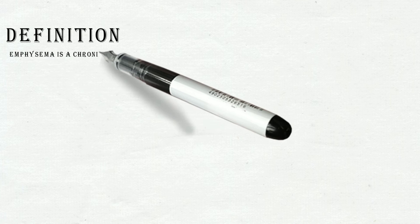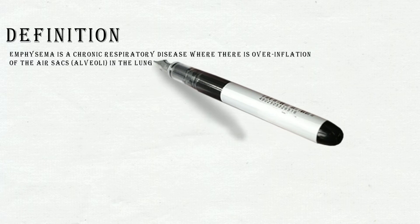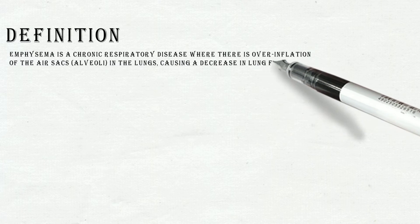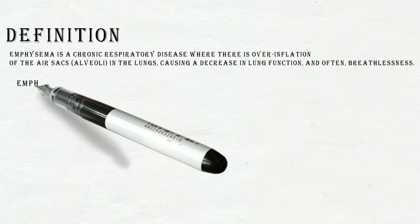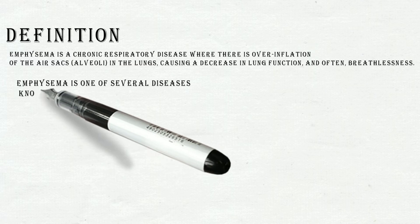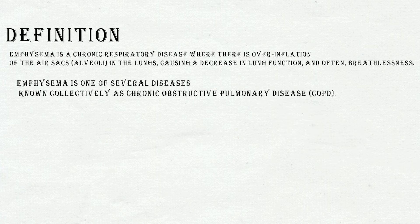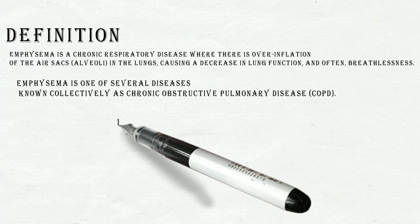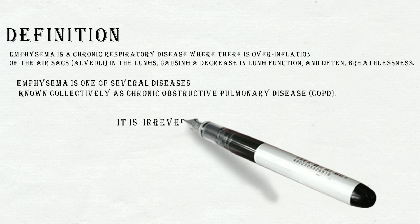Emphysema definition. Emphysema is a chronic respiratory disease where there is an overinflation of air sacs in the lungs, causing a decrease in lung function and often breathlessness. Emphysema is one of several diseases known collectively as chronic obstructive pulmonary disease. It is completely irreversible.